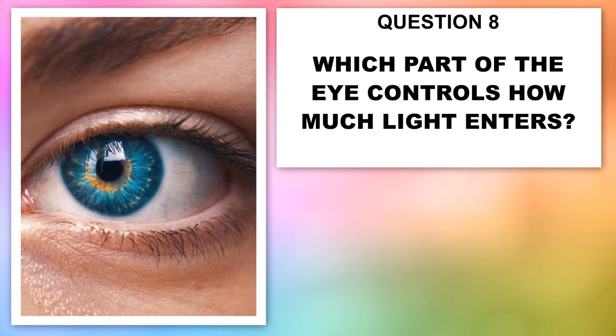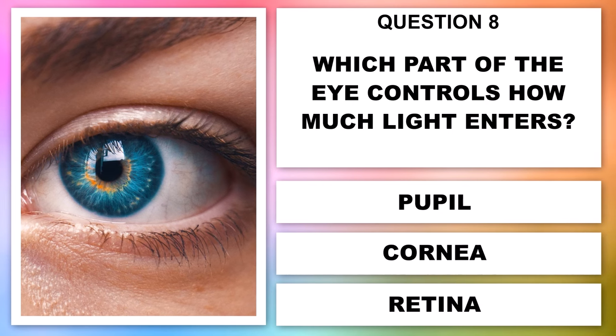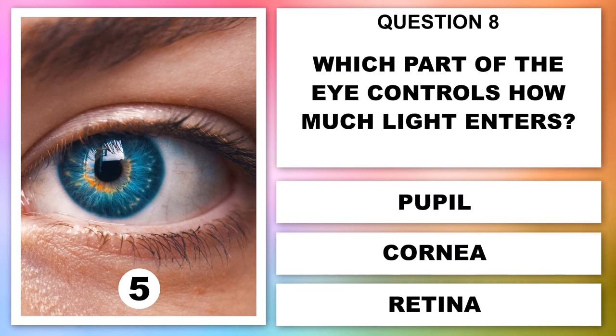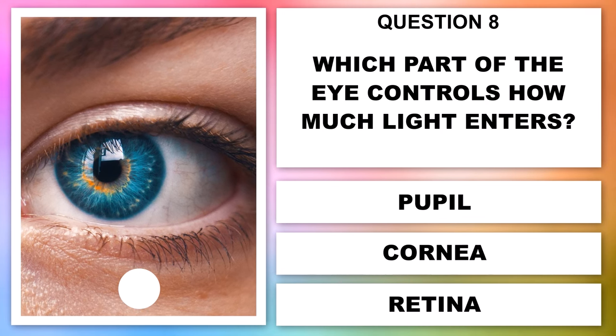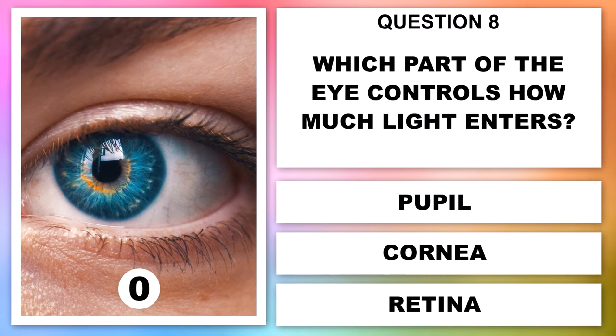Which part of the eye controls how much light enters? The pupil, the cornea or the retina?